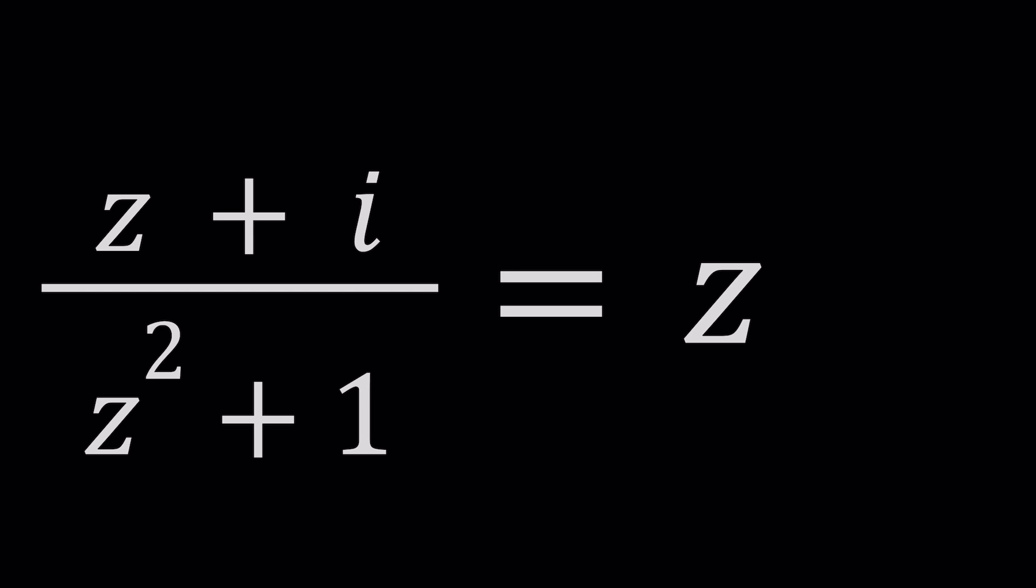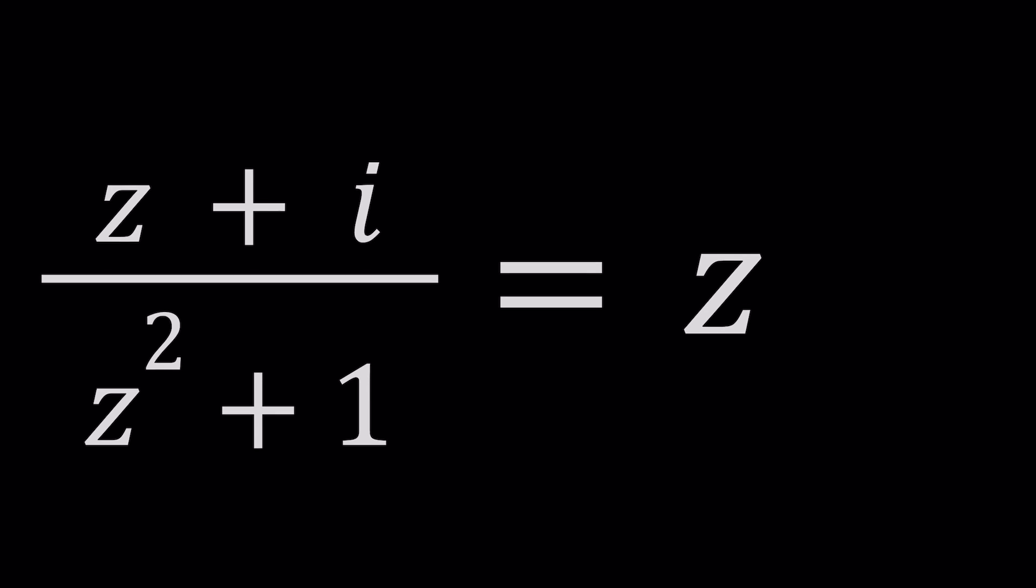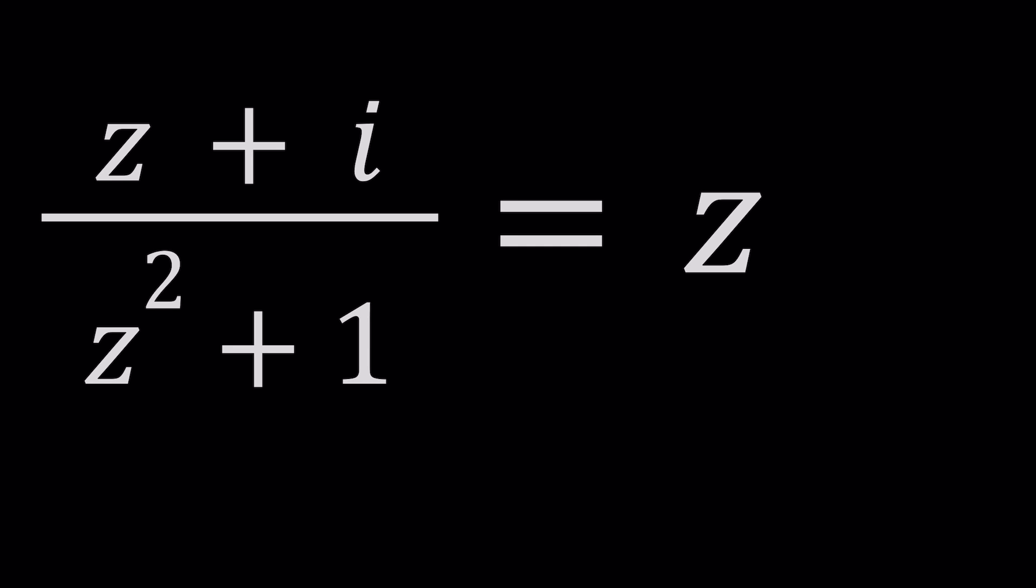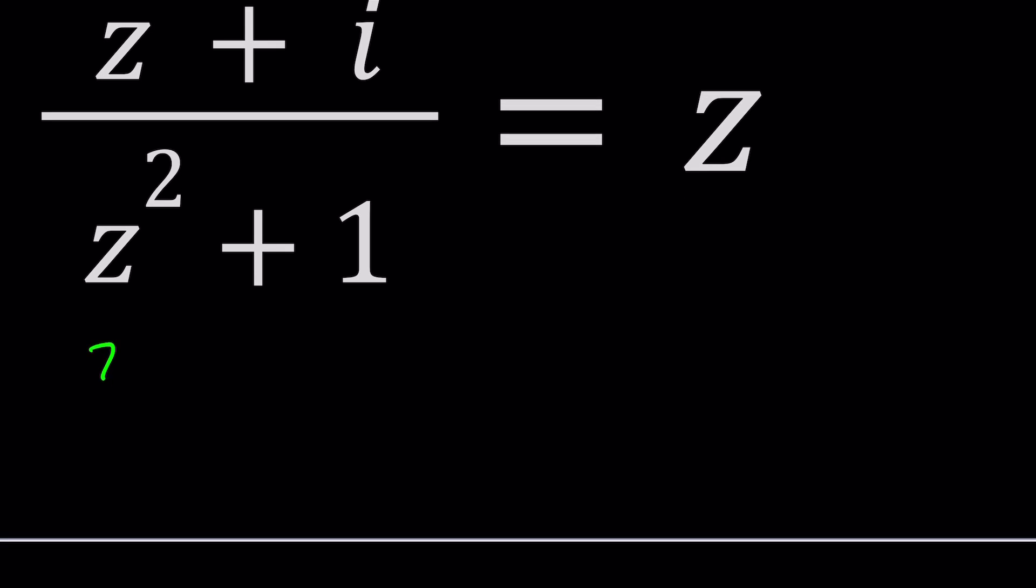So we have z plus i divided by z squared plus one which is equal to z and we're going to solve for z values. So how do you solve an equation like this? First of all it's a rational equation so we need to make sure a couple things. We can't have a zero in the denominator so let's make sure z squared plus one does not equal zero.